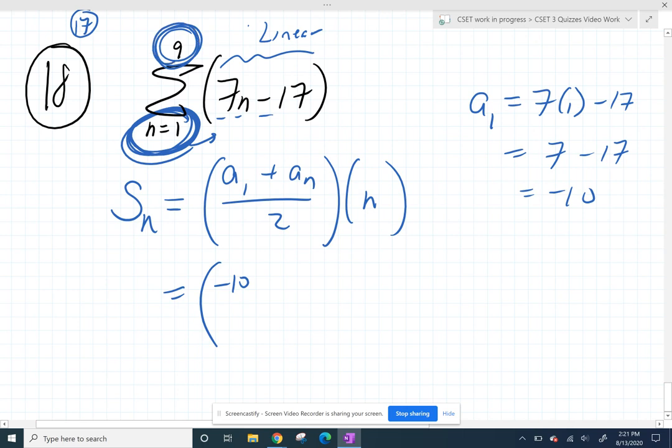And then the last term will be when you plug in a 9. So when I plug in a 9, I get 63 minus 17. So 63 minus 17 is 46.